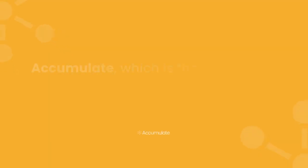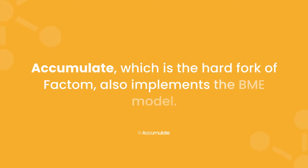Helium, which experienced massive growth and widespread adoption over the past couple of years, borrowed heavily from Factom in designing their tokenomics model and is now in the top 50 coins by market cap. Accumulate, which is the hard fork of Factom, also implements the BME model. However, Accumulate will use delegated proof of stake as opposed to Factom's proof of authority. It'll reward validators with a majority of its inflation, have a capped maximum supply, and also utilize a different governance structure to address some of the issues that Factom encountered.